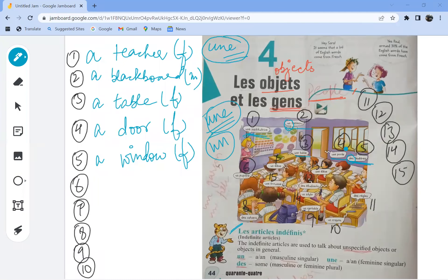Moving on to the sixth noun, un pupitre is a desk, which is again masculine since un is used.